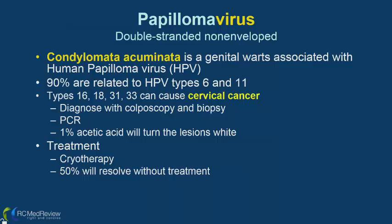Condyloma acuminata is a genital wart associated with human papillomavirus — remember the distinction from condyloma lata, which is a sign of secondary syphilis. Ninety percent of genital warts are related to HPV strains 6 and 11.